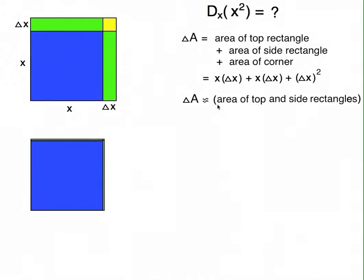The delta A is a wavy equal sign. If you haven't seen that before, it means approximation. The delta A, the change in the area, is pretty much the area of the top and the side rectangles, especially as delta x goes to zero. The closer delta x is to zero, the better this approximation is.